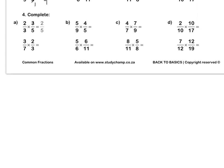Question 4. For this sum, we simplify our 3 and our 3 — divide by 3, divide by 3 — then we multiply out to get two fifths. Let's do this one together. We simplify by dividing our 5s — dividing by 5, dividing by 5 — then we multiply out to get four ninths.